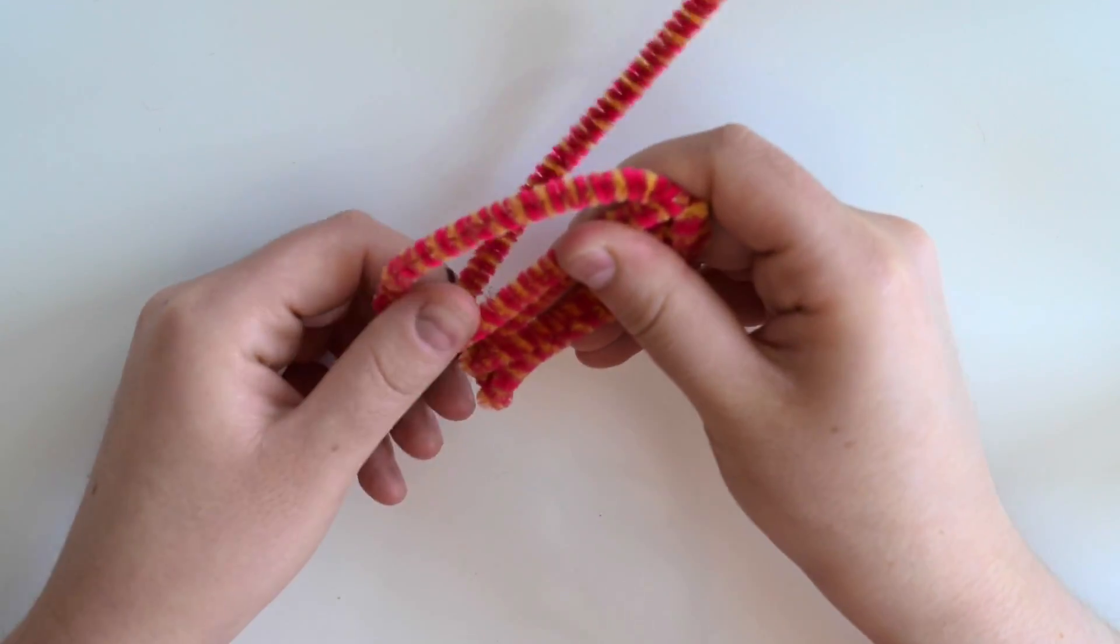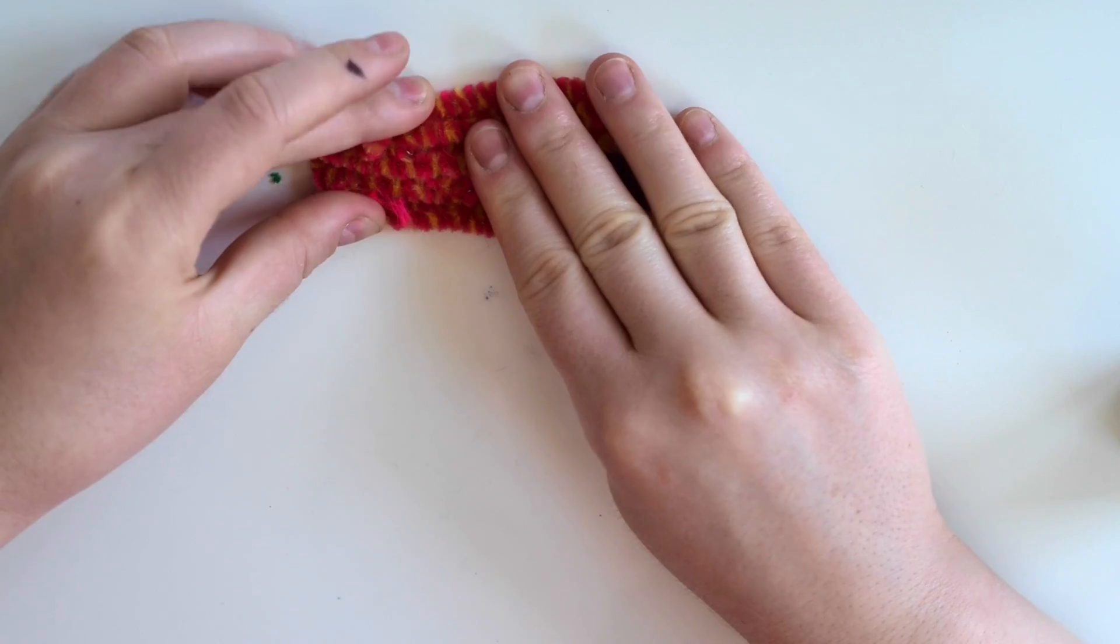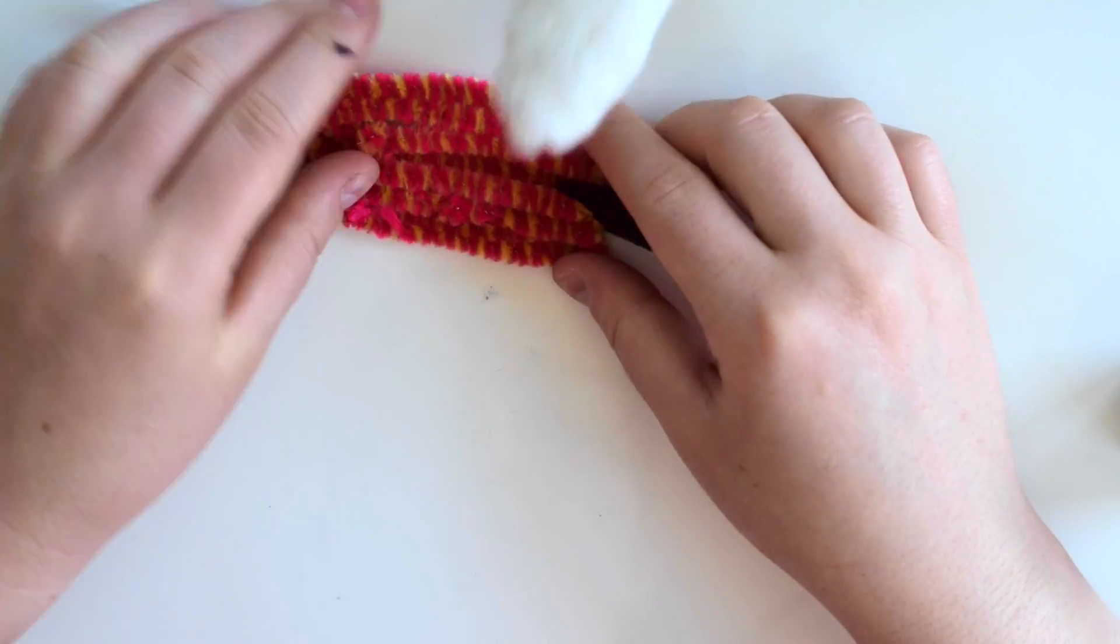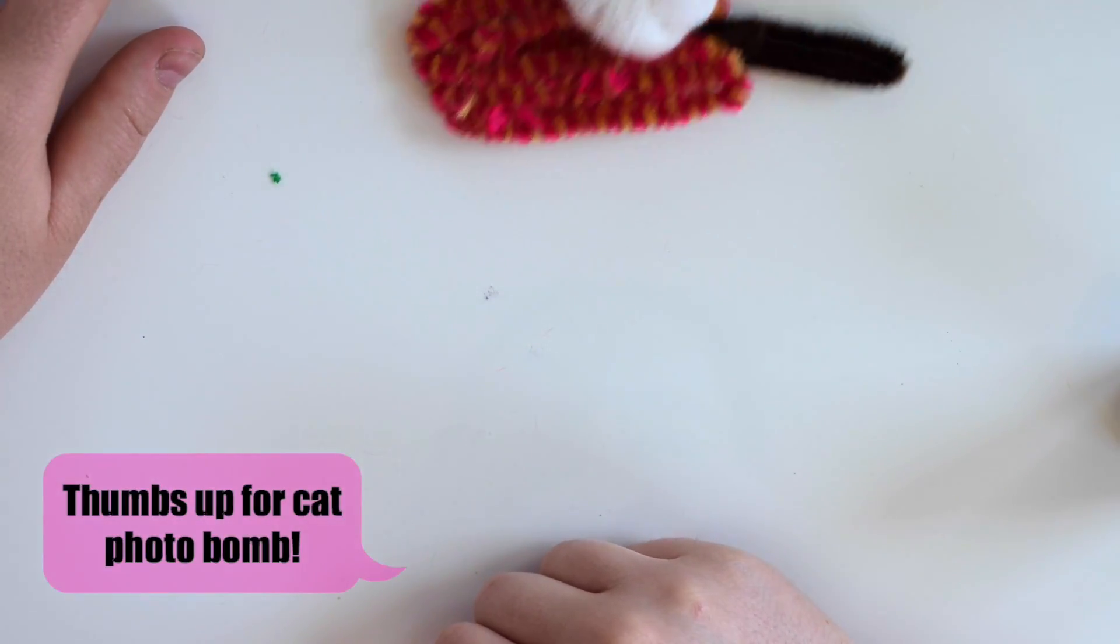You'll want to form the pipe cleaner into a popsicle shape and then fill in the center just as before. Just be aware of any cats that might be lurking. Let me tell you guys, doing this whole project was a nightmare.